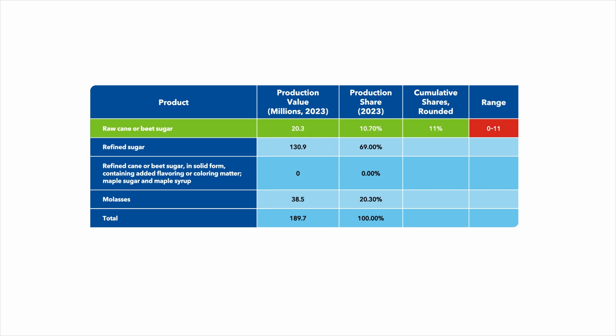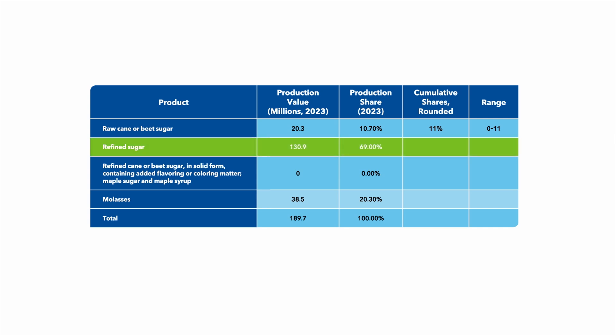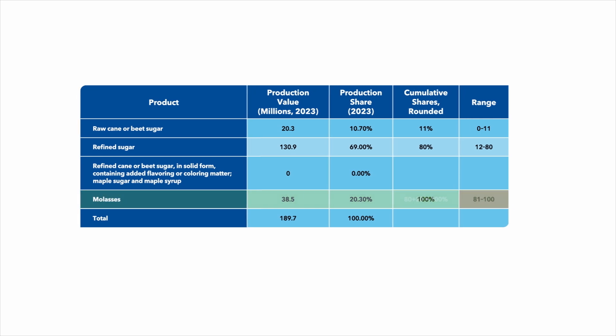The range for each additional category covers all consecutive numbers above the cumulative share reached with the previous unit through to the cumulative value reached with the current unit. For refined sugar, the cumulative value is calculated as 69 plus 11, so the range for refined sugar is 12 through 80, and for molasses it is 81 to 100.